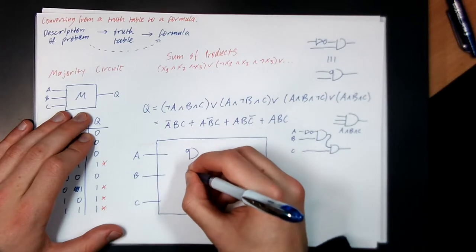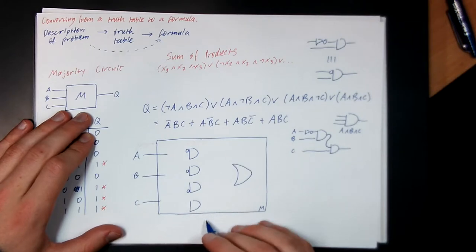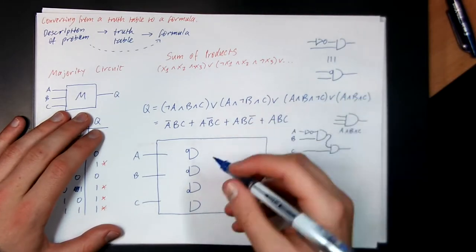So for each of these, it looks like a different inputs negated. So here I'll negate the A. Here I'll negate the B. Here I'll negate the C. And then for the last gate, there's no inputs that have been negated. And then we just connect all the wires together.